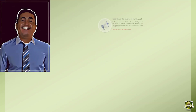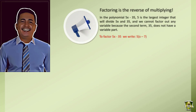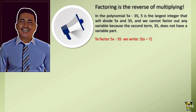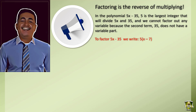In the polynomial 5x minus 35, 5 is the largest integer that will divide 5x and 35, and we cannot factor out any variable because the second term, 35, does not have a variable part. To factor 5x minus 35, we write 5 times the quantity x minus 7.